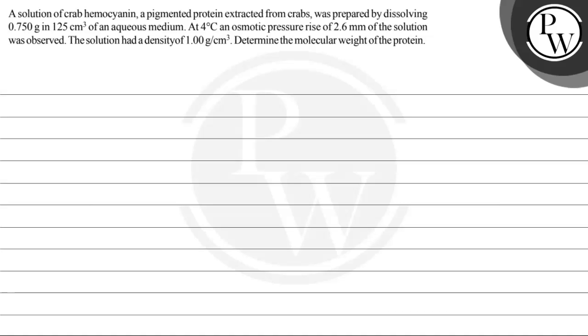Hello! Let's read this question. A solution of crab hemocyanin, a pigmented protein extracted from crabs, was prepared by dissolving 0.75 grams in 125 cm³ of an aqueous medium. At 4°C, an osmotic pressure rise of 2.6 mm of the solution was observed. The solution had a density of 1 g/cm³. Determine the molecular weight of the protein.